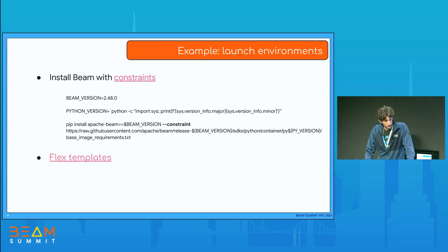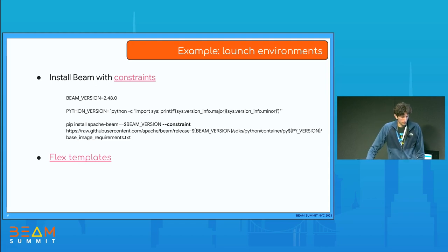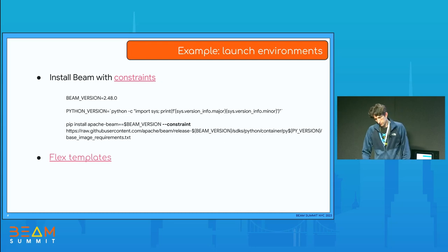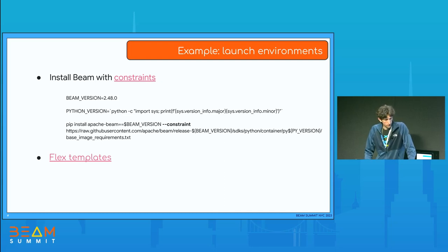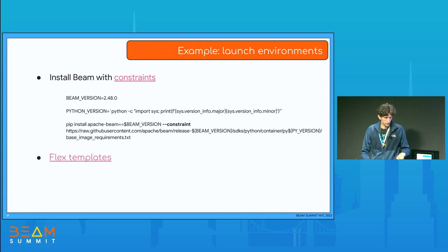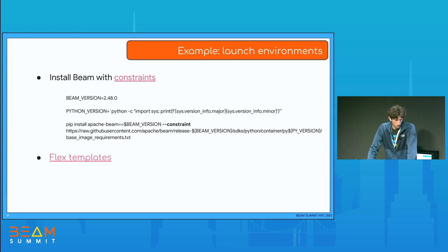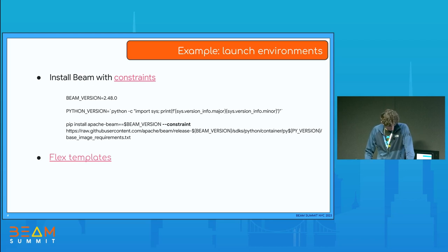In the launch environment, translation of the pipeline happens before the job is submitted to the runner, and then the runner deserializes the pickled or serialized pipeline representation. It's important to have reproducible environments so that whenever you rerun the pipeline, the representation and the way it will be deserialized on the workers will be the same unless you decide to make changes. For the launch environment, you can install Apache Beam using a constraint file, matching all local dependencies to those in the Beam container. Dataflow users can also use FlexTemplates to containerize the pipeline launch environment in a Docker container.